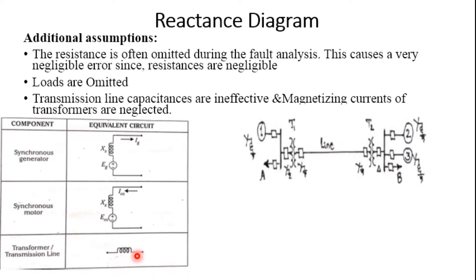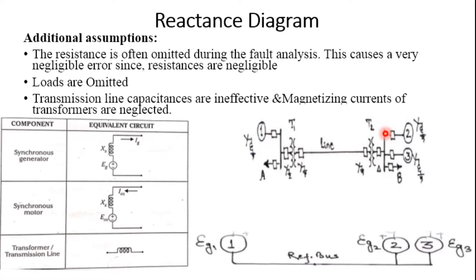Using the previously given one-line diagram, we now derive the reactance diagram. The diagram includes: a reactance diagram for the generators, transformers, transmission line, and loads. Generator G1 is drawn as reactance XG1 in series with source EMF EG1. Transformer T1 is a series reactance XT1. The transmission line follows as its equivalent series reactance. Transformer T2 is drawn as series reactance XT2.